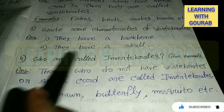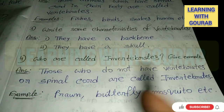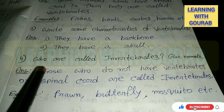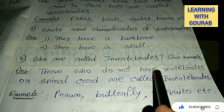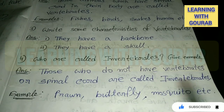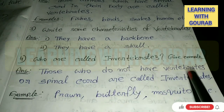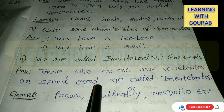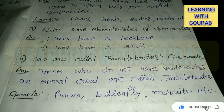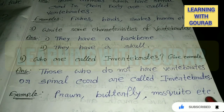Next question: Who are called invertebrates? Give examples. Answer: Those who do not have vertebrates or a spinal cord are called invertebrates. Examples: prawn, butterfly, mosquito, etc.